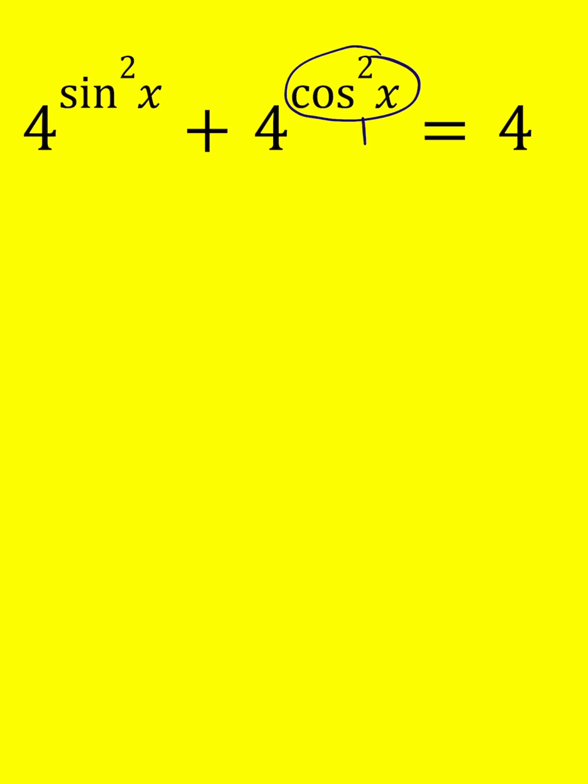So I can replace cosine squared with 1 minus sine squared. That gives us 4 to the power sine squared x plus 4 to the power 1 minus sine squared.